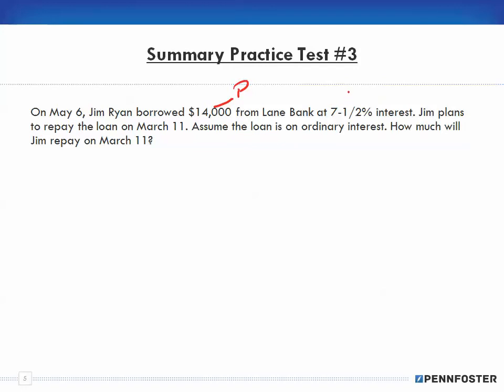It says here on May 6th, Jim borrowed $14,000 at a rate of 7.5% from Lane Bank. Jim plans to repay the loan on March 11th.